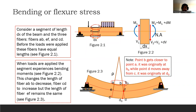Once bending has happened, the bottom fiber stretches — notice that this is the original point, and it extends outward. The only thing that hasn't changed in length is the middle fiber. This middle fiber is called the neutral axis of your beam.